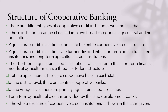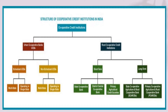The whole structure of cooperative credit institution is shown here. The cooperative credit institution is divided into urban cooperative credit institution and rural cooperative credit institution. Under urban cooperative credit institution, you have both scheduled as well as non-scheduled entities. Under scheduled, you have multi-state and uni-state credit institutions. Multi-state means it would be operating in different states simultaneously, and uni-state means it would be operating in a particular state at a time. In the case of non-scheduled credit institutions also, we could see both multi-state as well as uni-state.